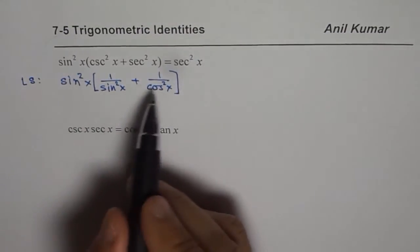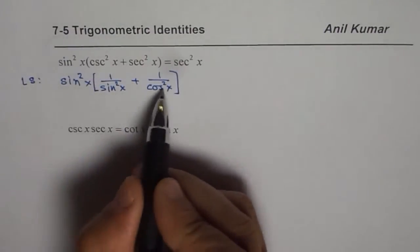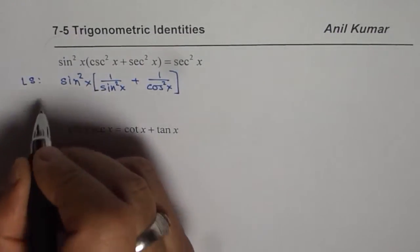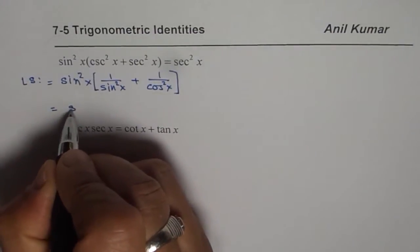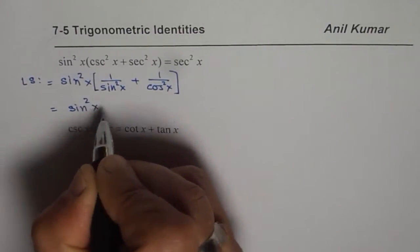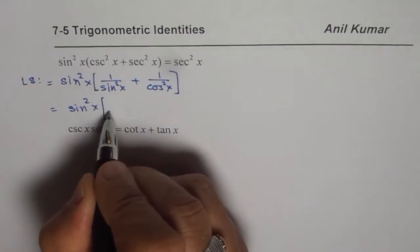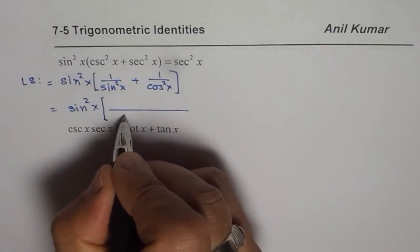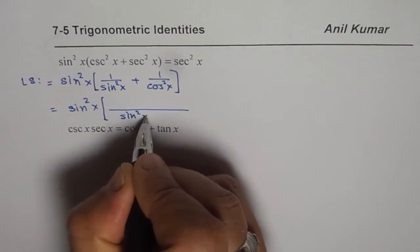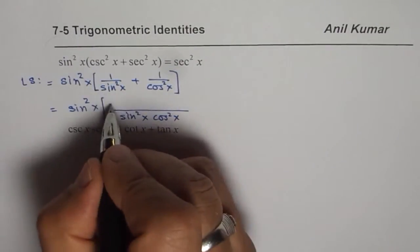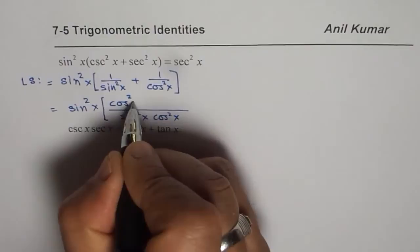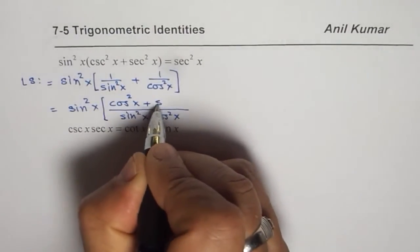Now at this stage we can take a common factor. Once we take the common denominator which is sin²x cos²x, in the numerator when we cross multiply we get cos²x + sin²x.